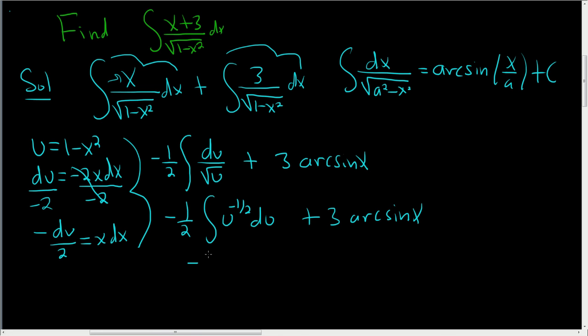Integrate using the power rule, so we have -1/2. Now, -1/2 plus 1 is 1/2, so we get u to the 1/2, divided by 1/2. These will cancel. Plus 3 arcsin x plus C.